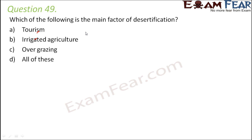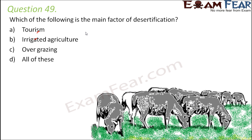Question number 49: Which of the following is the main factor of desertification? Options are tourism, irrigated agriculture, overgrazing, or all of these. To some extent all of these factors contribute to desertification, but the question asks for one main factor. Overgrazing is the main factor of desertification.